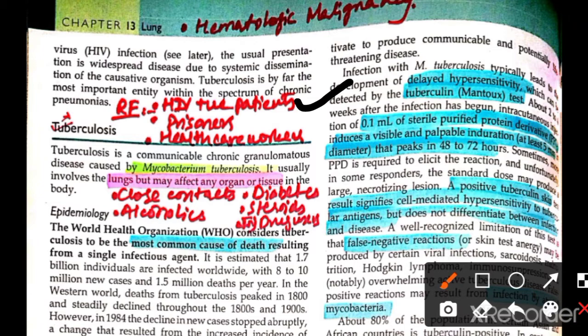Other risk factors include: HIV-positive patients, prisoners — because they are in close contact with each other — and healthcare workers who work in hospitals dealing with TB patients.